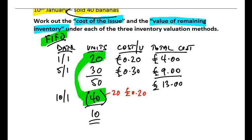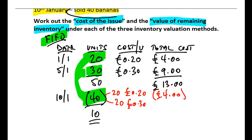The first into the storeroom were the 20 purchased on the 1st of January, so they'll be the first out. Those 20 units were at 20 pence each, making £4 worth of inventory — that forms the first portion of the 40 being sold. But 20 bananas doesn't make up the full 40, so we go to the next oldest: 20 of the 30 bought on the 5th of January at 30 pence per unit. 20 times 30p gives a cost of £6 for those 20 bananas.